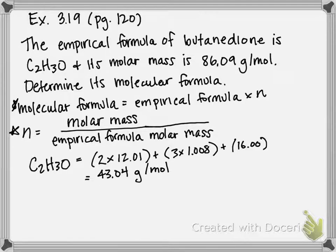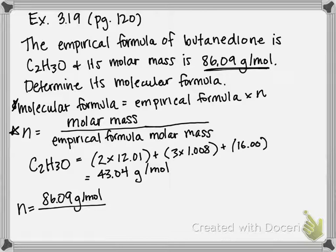So now we have the empirical formula molar mass, and we can plug into our equation for N. N is equal to molar mass, which is stated in the problem, 86.09 grams per mole, divided by the empirical formula molar mass, which is what we just calculated, 43.04 grams per mole. If we divide those, grams per mole cancels out, 86.09 divided by 43.04 gives us a whole number of 2.